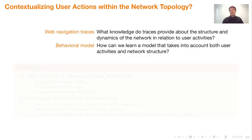Ultimately, the problem lies in contextualizing user actions within the network topology to gain a comprehensive understanding of why and how resources are being used. On the one hand, this involves investigating what knowledge web navigation traces provide about the structure and dynamics of the network in relation to user activities. On the other hand, we also need to investigate how we can learn a model that takes into account both user activities and network structure.